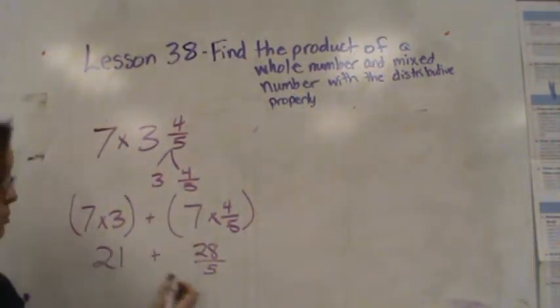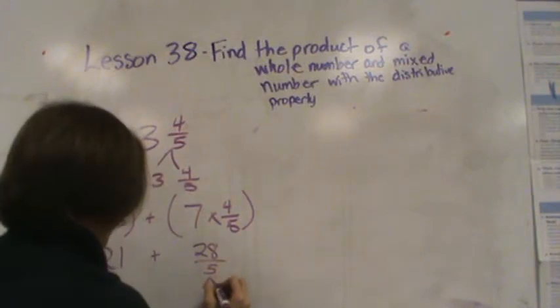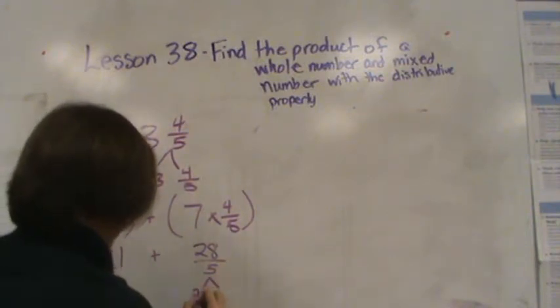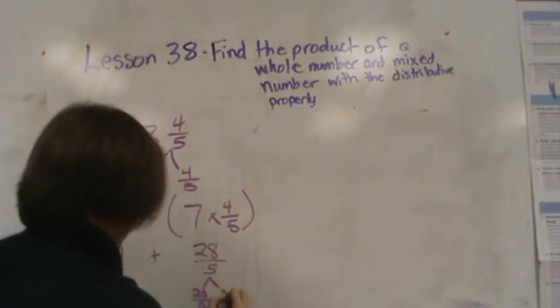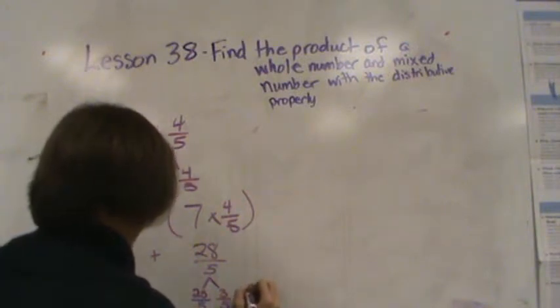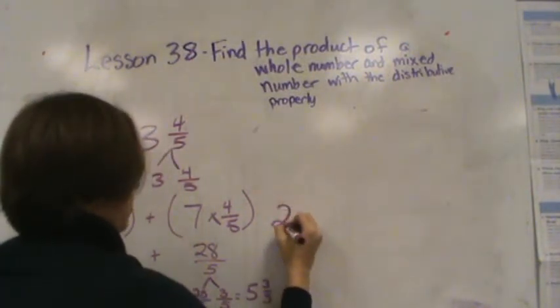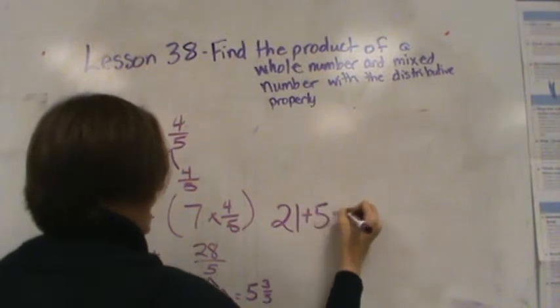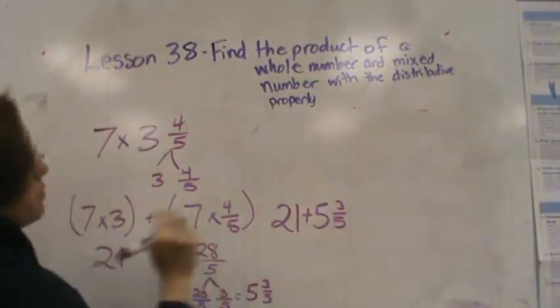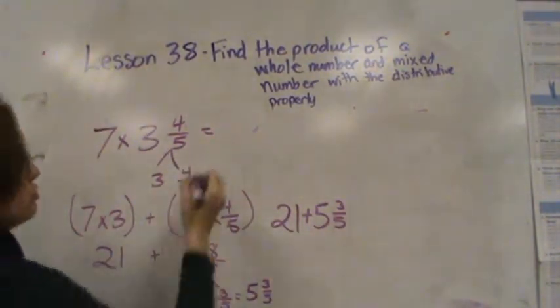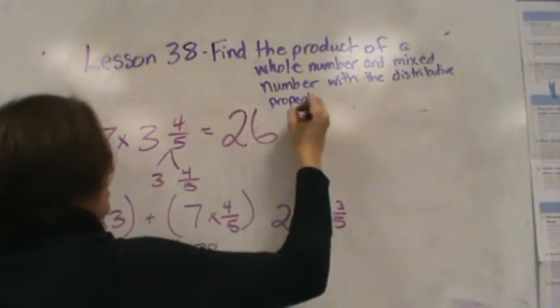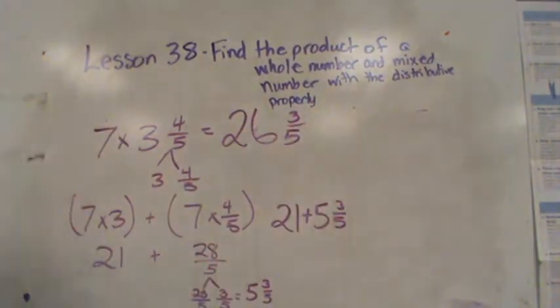I'm going to decompose before I add. 28 fifths is equal to 25 fifths and 3 more fifths. That's the same as saying 5 and 3 fifths. So I have 21 plus 5 and 3 fifths. 21 plus 5 is equal to 26 and then I have 3 more fifths and I'm done.